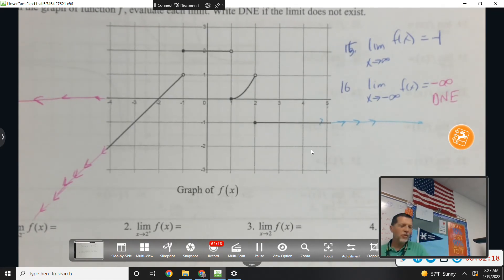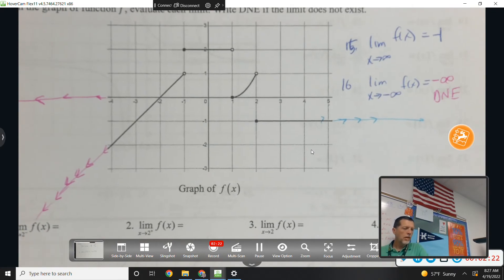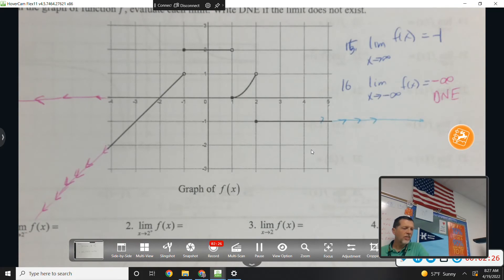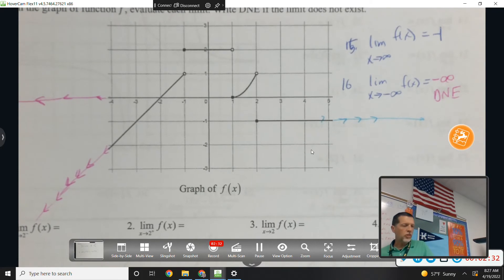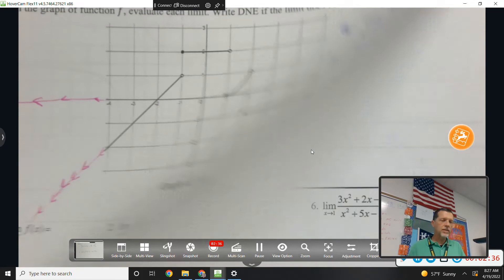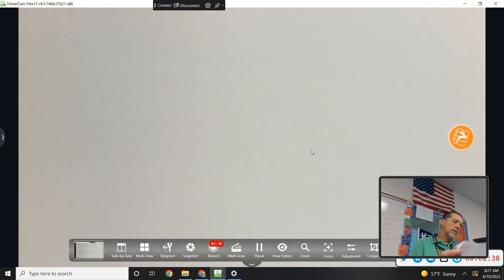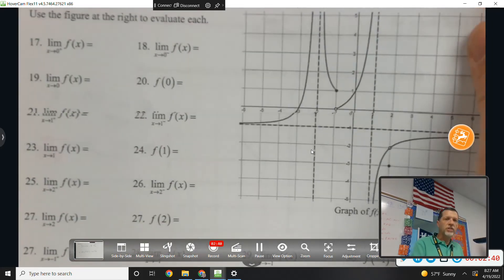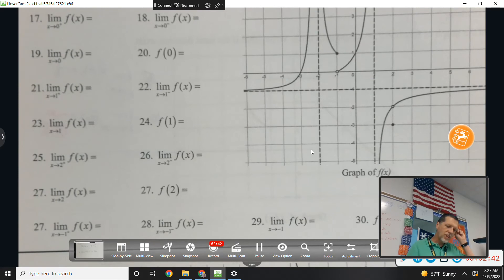Anything else from the first page? Again, the first three lines kind of go together because it's all about 2 and then negative 1 and positive 1. So handling the open circles and closed circles, jumps and all that. That picture looks a little crazy.